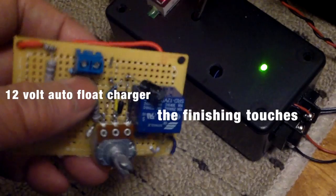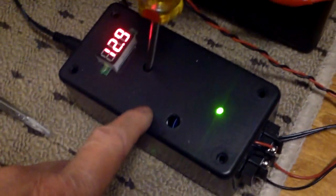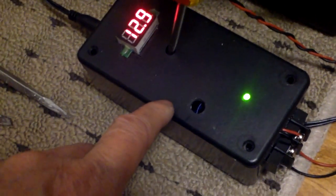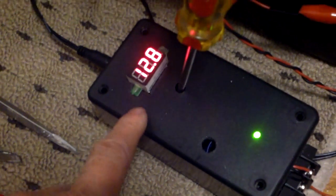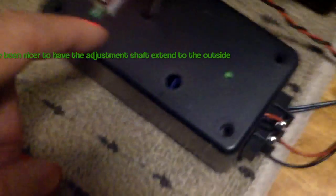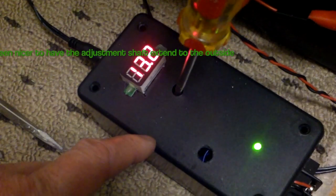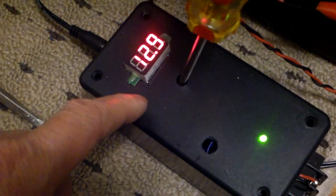All right, I just finished putting this circuit board inside the project box here and I mounted the digital voltmeter and the LED and terminal block. Now I'm just making some final adjustments.